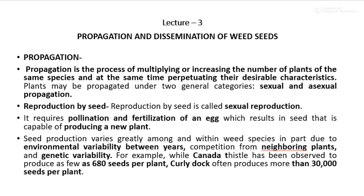Sexual propagation means the reproduction of plants by means of a seed. For sexual reproduction, pollination and fertilization of an egg are required, which results in a seed that is capable of producing new plants.